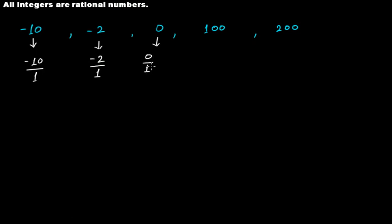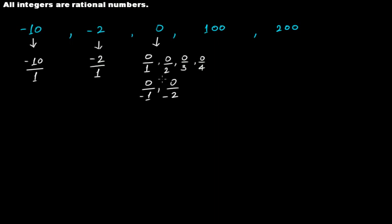But wait — we can write 0 as 0 divided by 1, or 0 divided by 2, or 0 divided by 3, or 0 divided by 4, or 0 divided by minus 1, or 0 divided by minus 2. It can be any integer whether positive or negative in the denominator. Only you cannot have 0 in the denominator. Take any integer in the denominator, whether positive or negative, and you are going to get back 0.